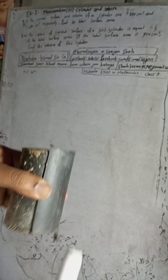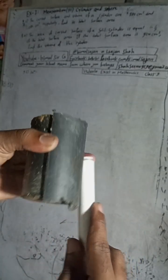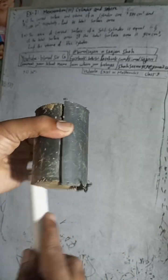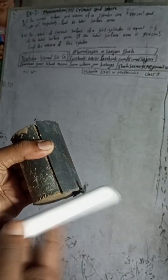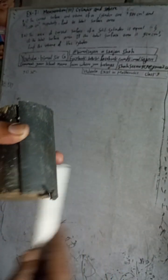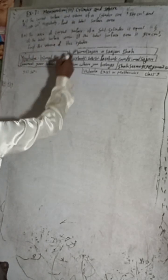The curved surface area means this part - without the top and bottom bases. So the curved surface area is this. Now I'm going to write here the curved surface area.